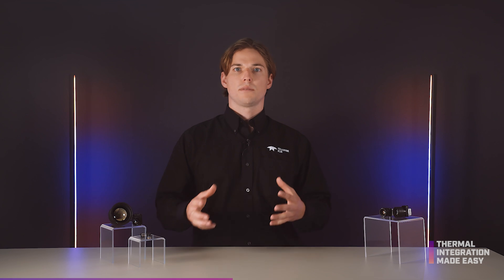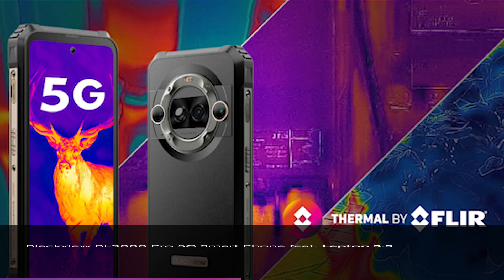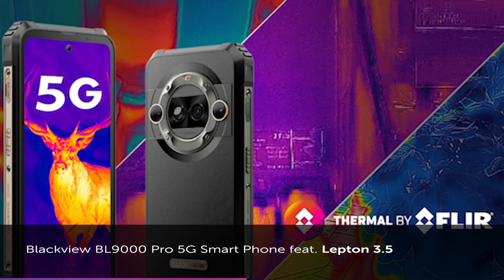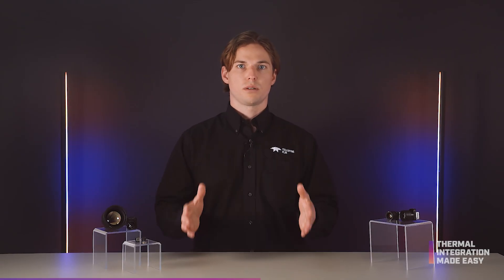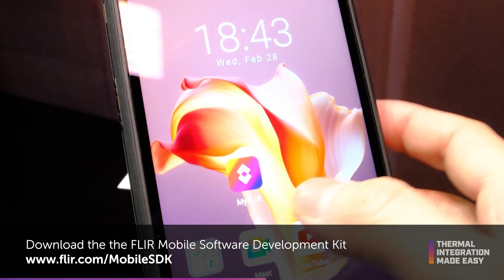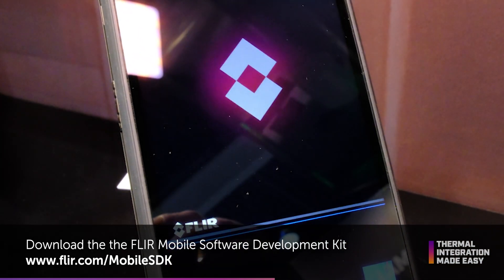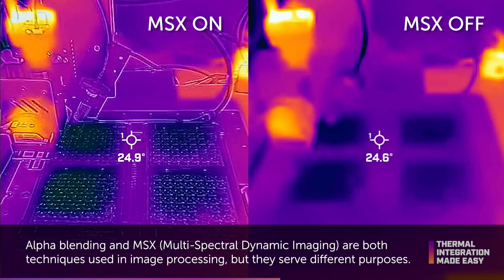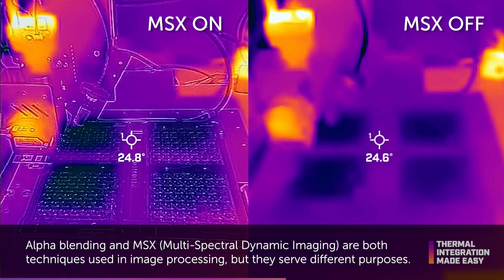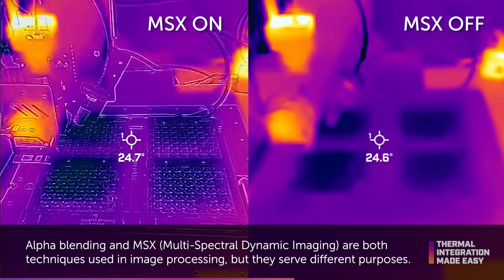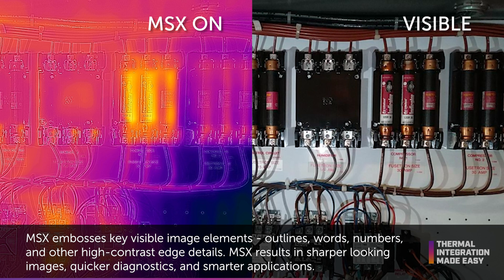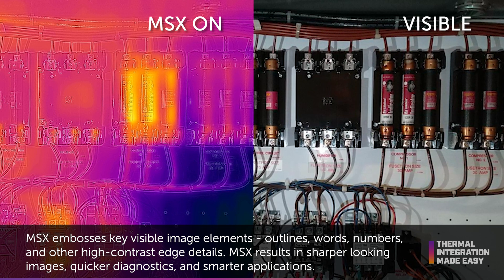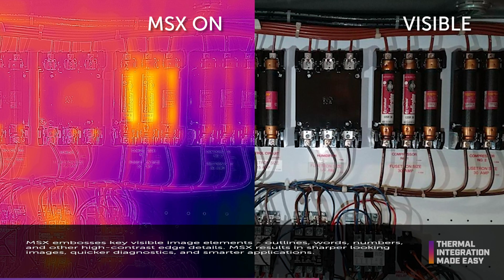By integrating Lepton with a visible light camera and a smart device such as a smartphone or an early fire detection system, both a thermal image and a visible image are captured simultaneously. In mobile applications specifically, our MyFlir application can emboss key visible image data — including text and number outlines and other high contrast edge details — on the thermal image. MSX gives more clarity to lower resolution imagery, allowing operators to quickly locate a faulty component, identify an object class, and measure accurate temperatures.